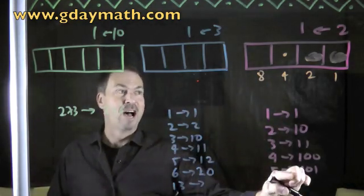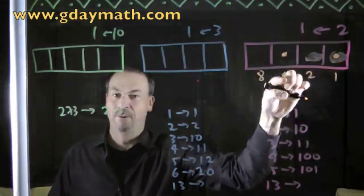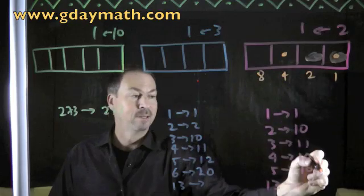And to check ourselves, we said 5 was 1, 0, 1. So if I did 1 dot, 0 dots, 1 dot, I got 1, 4, 1. I know it's 5.